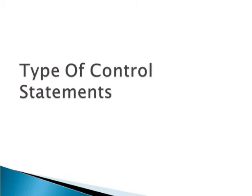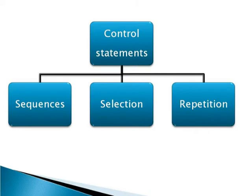Control statements are the statements that select or repeat the control flow of a program. There are three basic types of control statements: sequence, selection, and repetition.